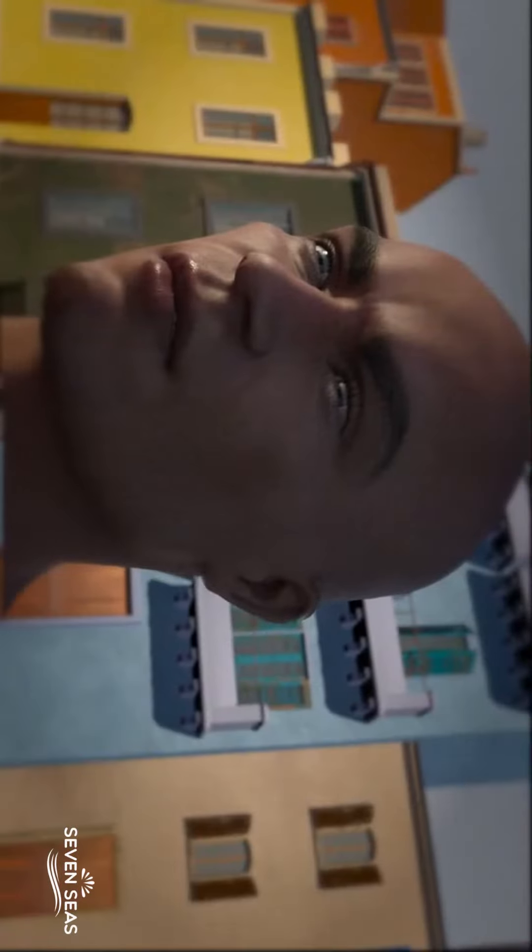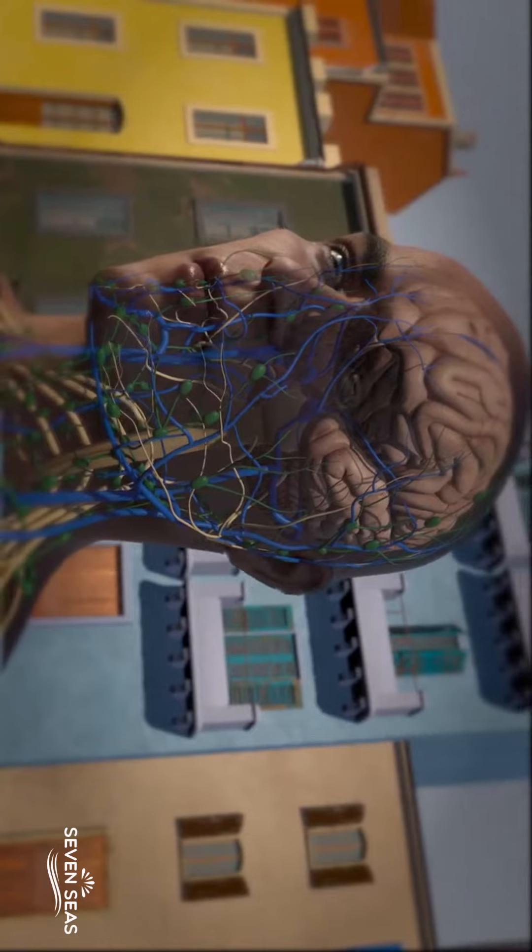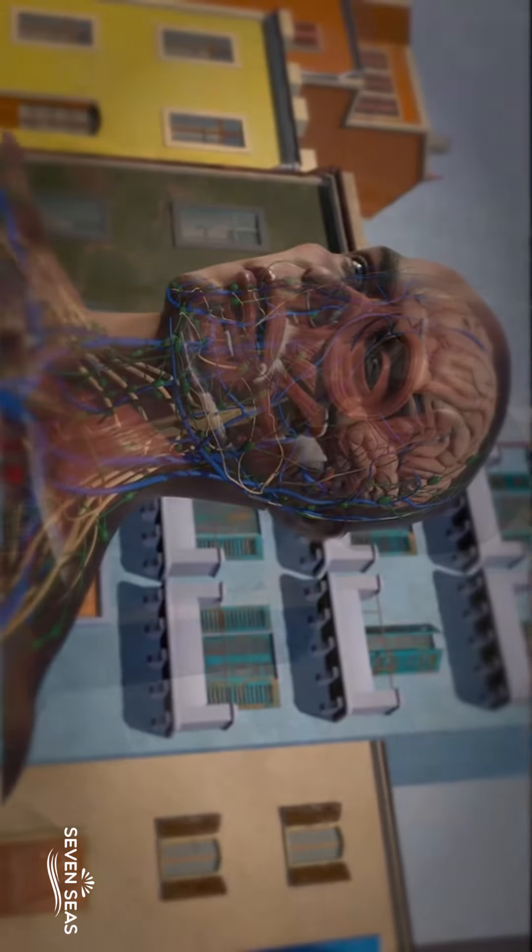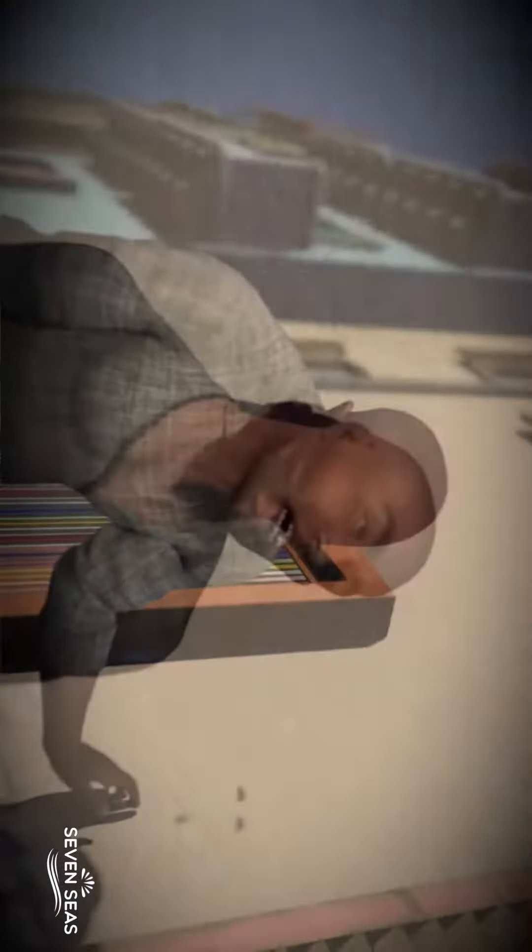Novichok attacks the central nervous system, disrupting communication between the brain, the main organs, and muscles. The resulting loss of muscle control leads to breathing difficulties and paralysis. In severe cases, death can occur by asphyxiation and heart failure.